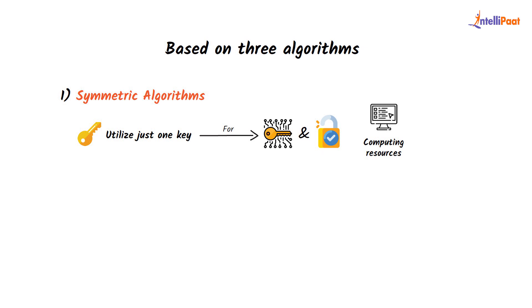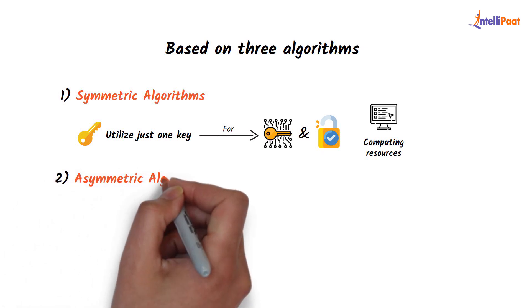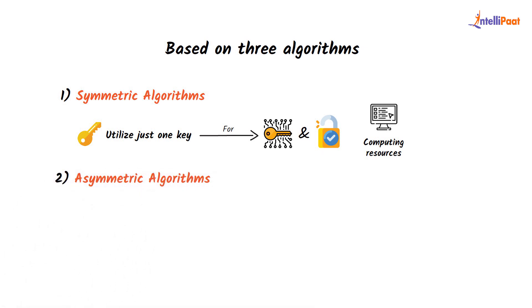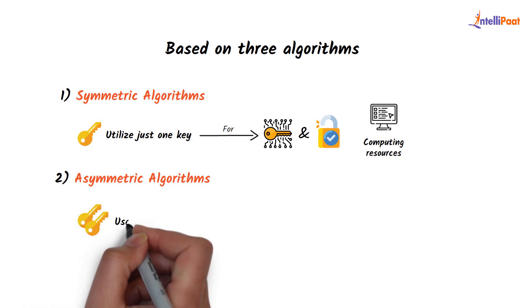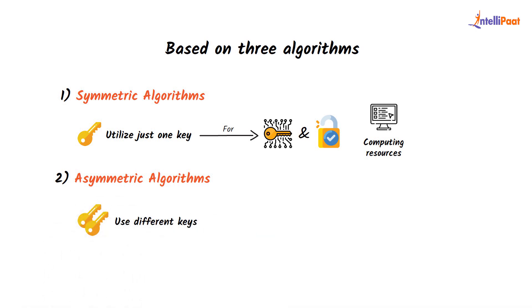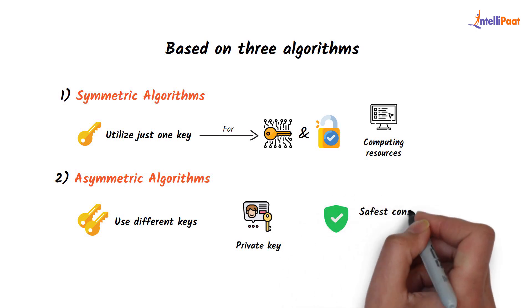The second type is asymmetric algorithms. Unlike symmetric algorithms, asymmetric algorithms use different keys for encryption and decryption. A decryption key, often referred to as the recipient's private key, is required for each recipient. Asymmetric algorithms are considered the safest among these algorithms.